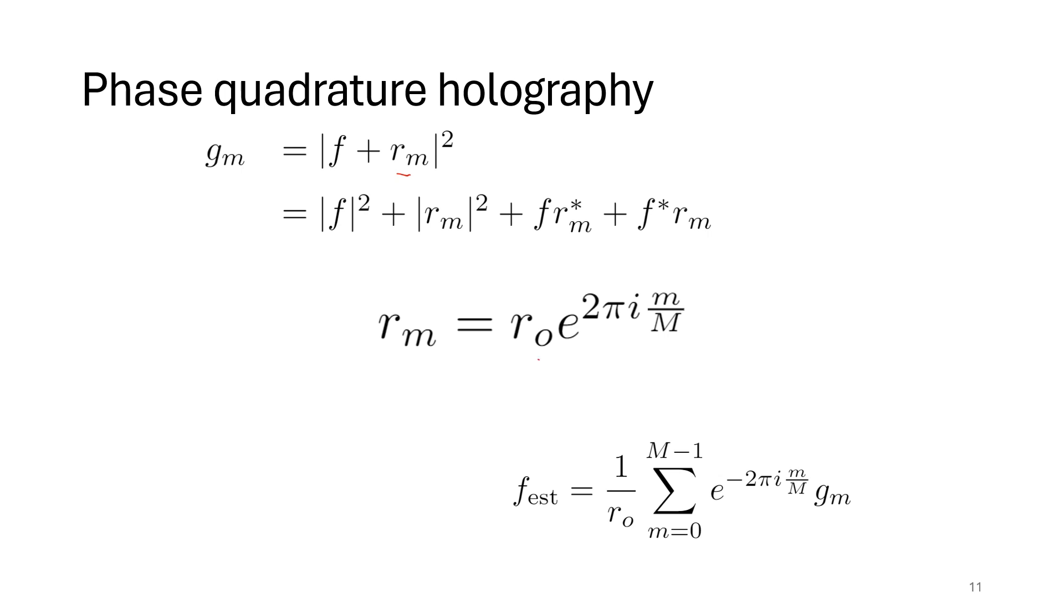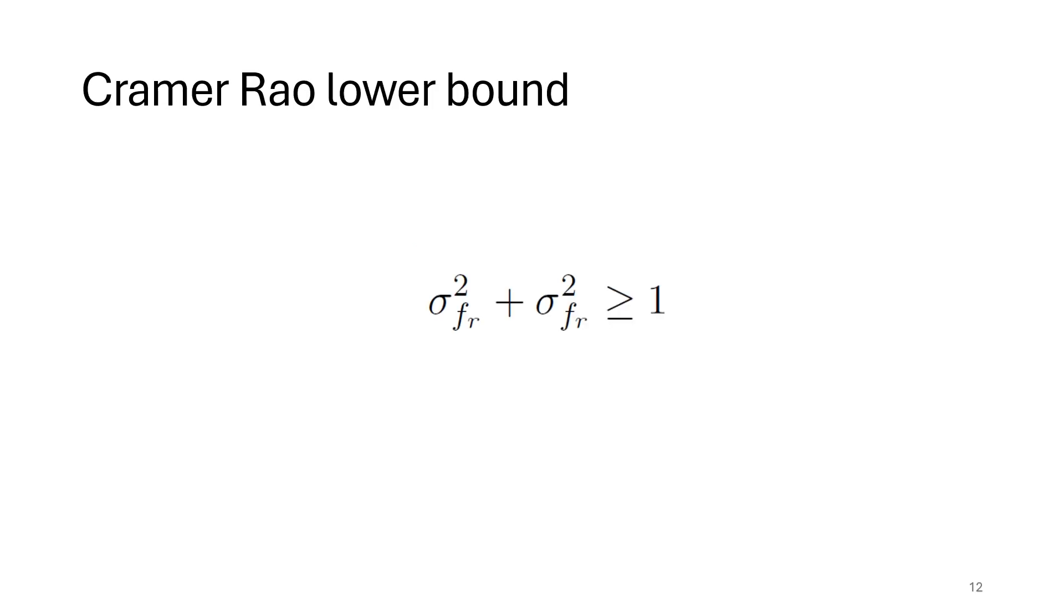For example, we could shift the phase of the reference in sequence. If we do that, as we shift the phase of the reference beam, the phase of the magnitude squared of f won't change, magnitude squared of r won't change. But the phase of these two terms will change. And so we can do Fourier analysis on that changing phase and recover the unknown field f. And that can be done with very high accuracy.